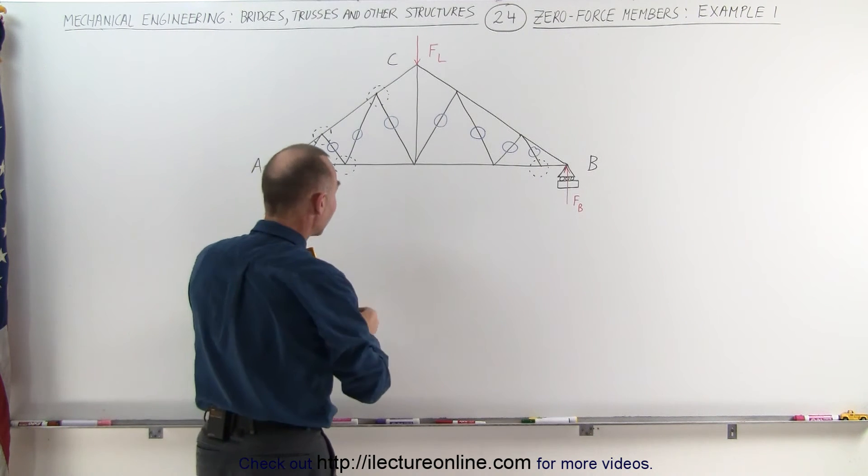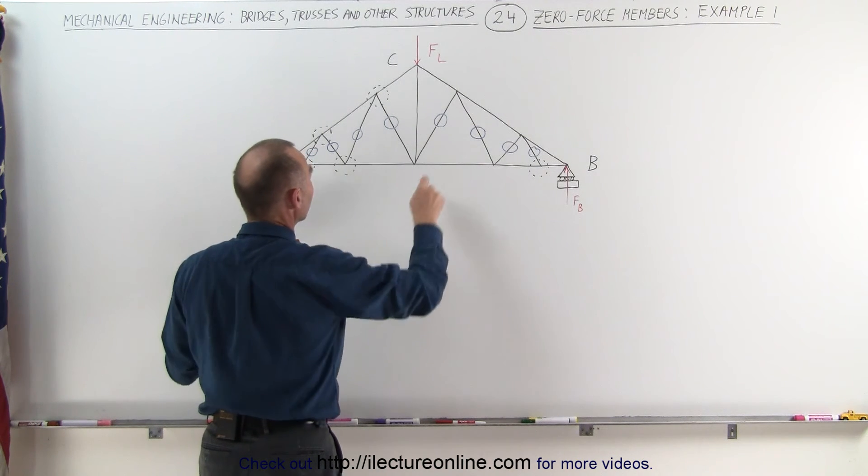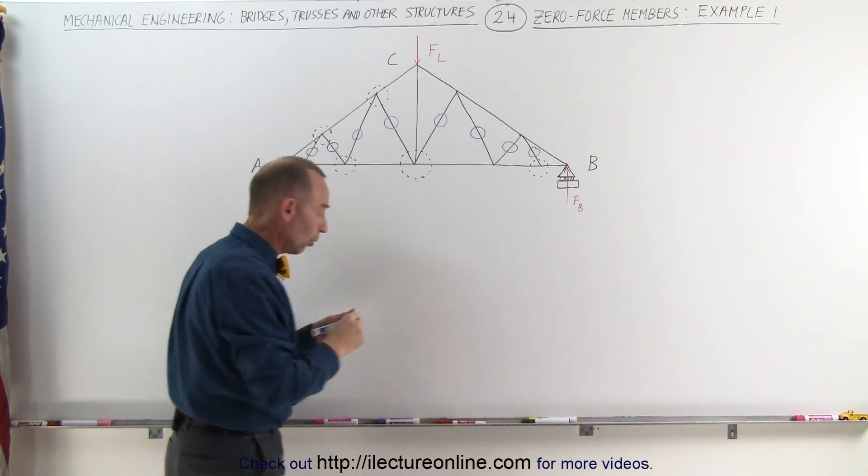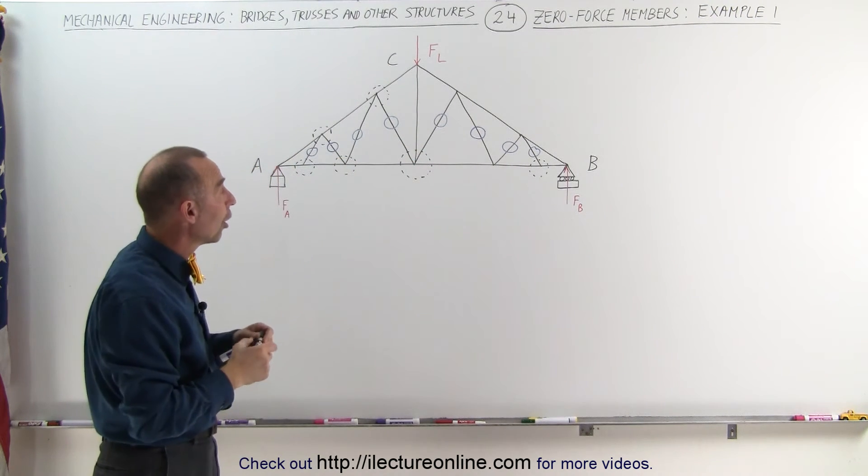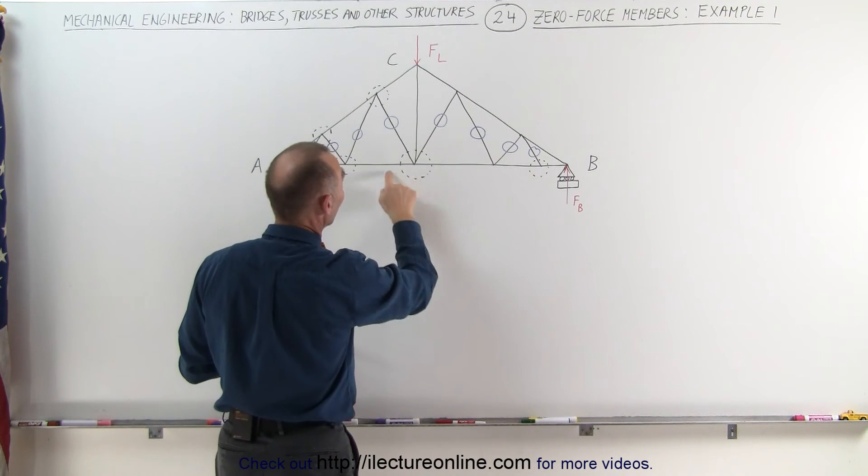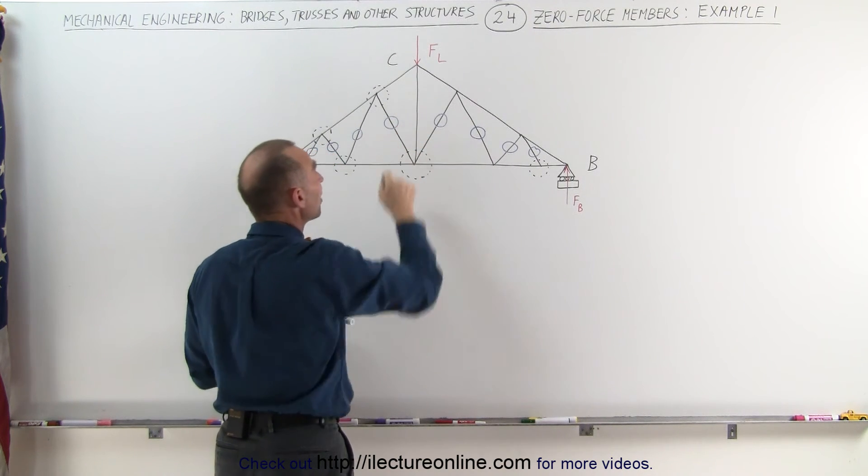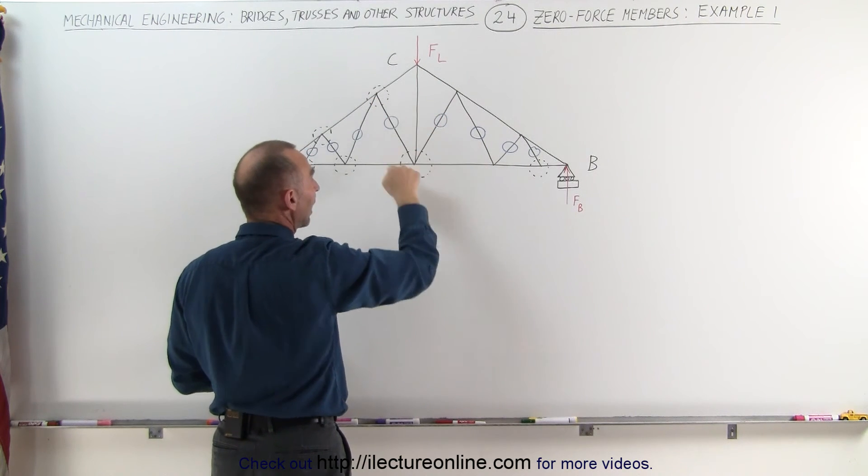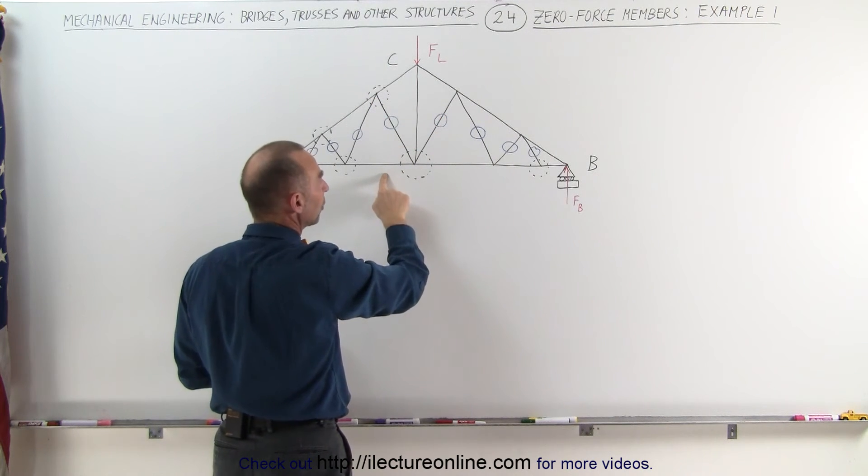Finally, now let's take a look at this joint right here. Now, normally we'd say this is a four-member joint, but two of the four members are zero force members. Actually, it's one, two, three, four, a five-member joint. But these two are zero force members, so they can be ignored. Now we're down to just a three-member joint.